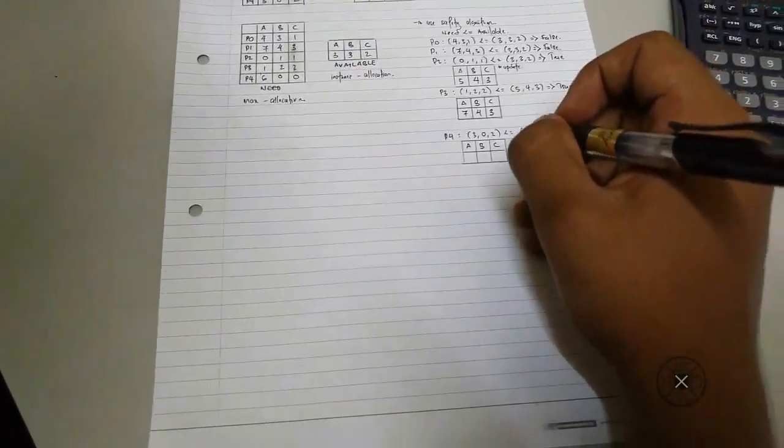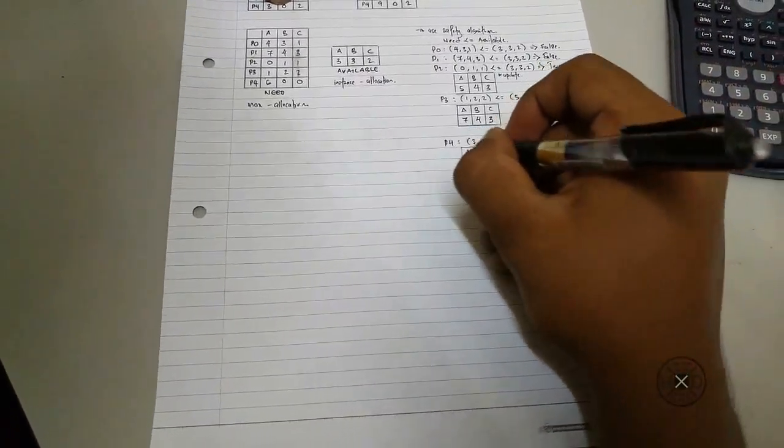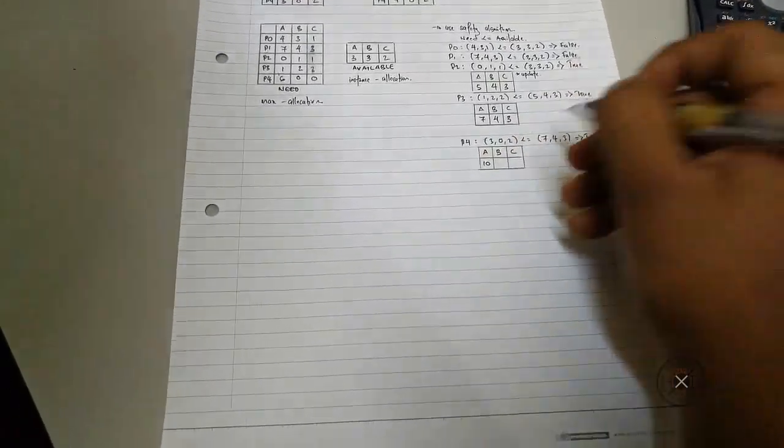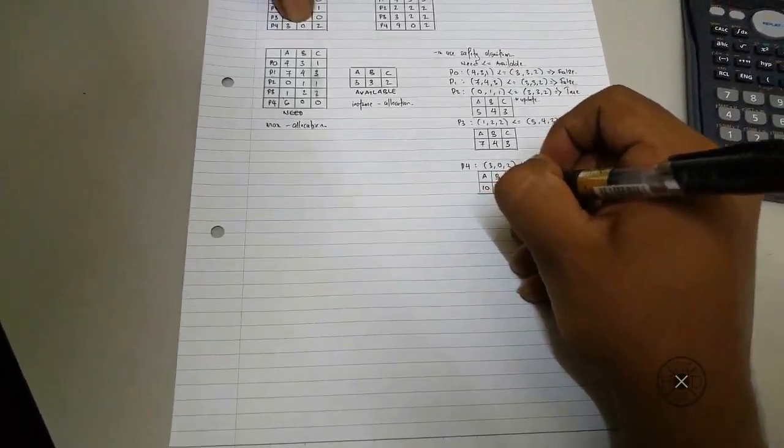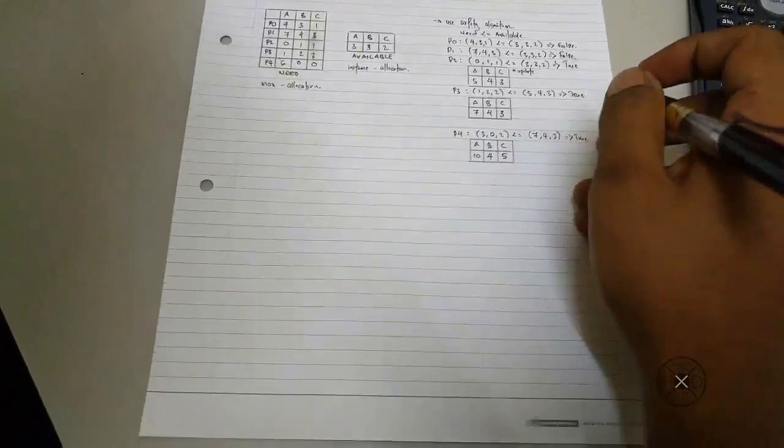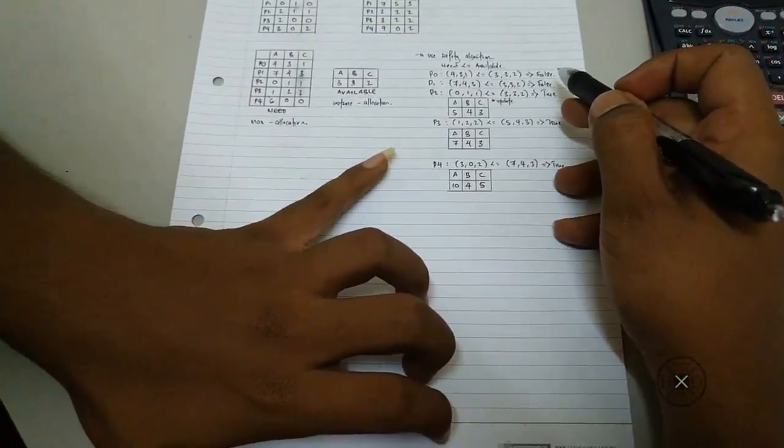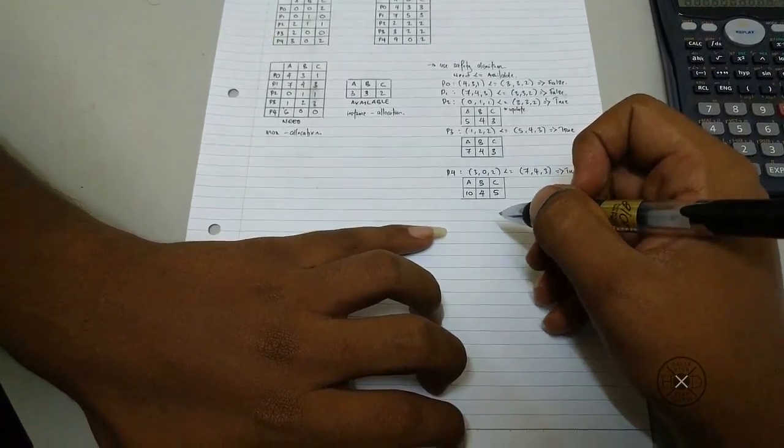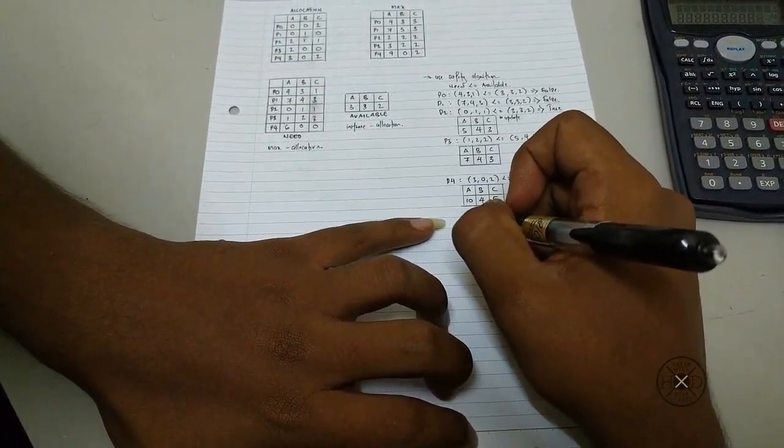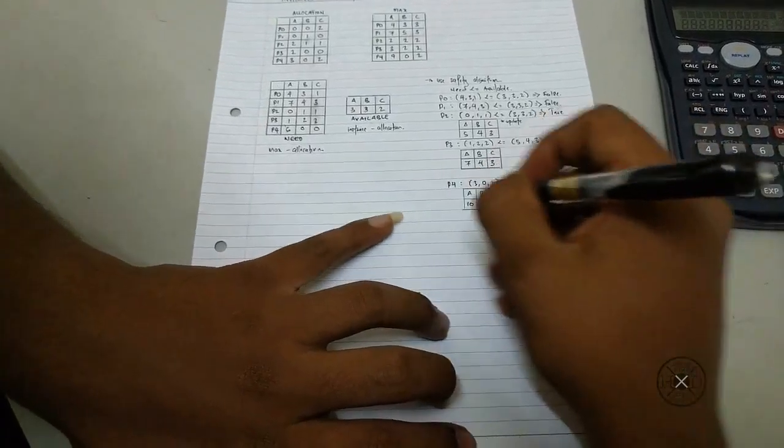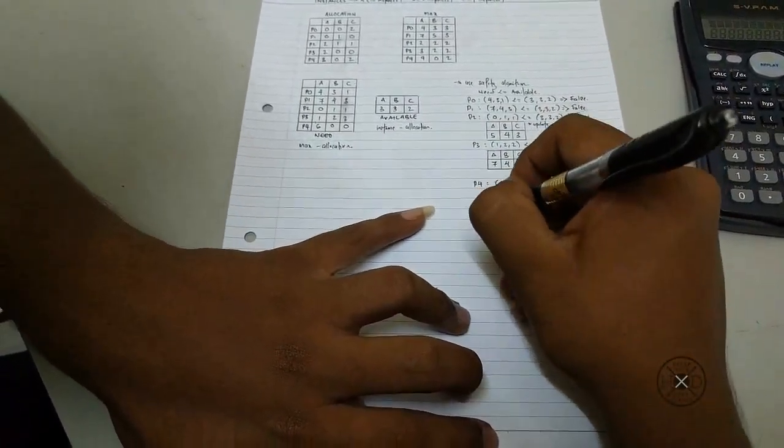The allocation for process 4 is 3, 0, 2. So it will add up, it will become 10, 4, 5. So now which is false, we have to roll back. We will have to roll back which value is false, so we will back to process 0.